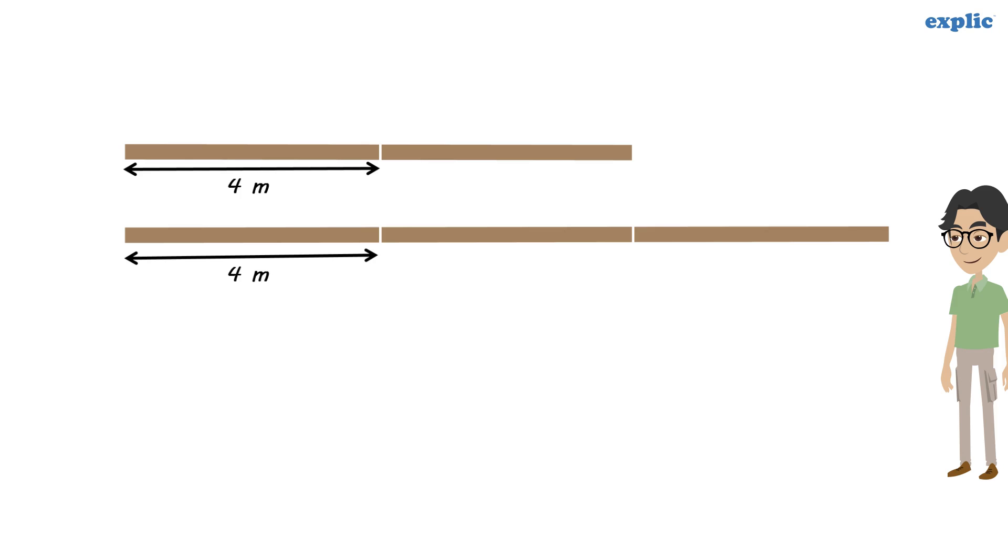Therefore, the longest stick that can be cut from both the sticks is 4 meters. 4 can also be called as highest common factor or HCF of 8 and 12.